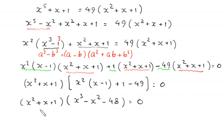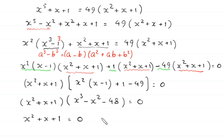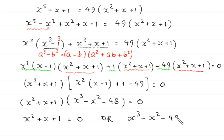Next, x squared plus x plus 1 times x cubed minus x squared minus 48 is equal to 0. From here, either x squared plus x plus 1 equals 0, or x cubed minus x squared minus 48 equals 0.